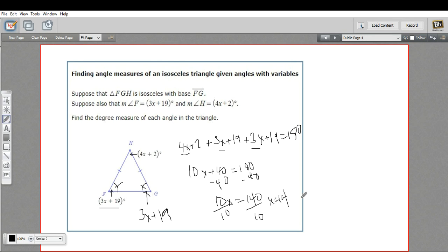Not done yet. Now we need to take this value of 14 and plug it back in in each of these expressions. So 4 times 14 plus 2 is going to be the angle at h. So let's see. It's 56, 58, I think. You might want to double check that on your calculator.